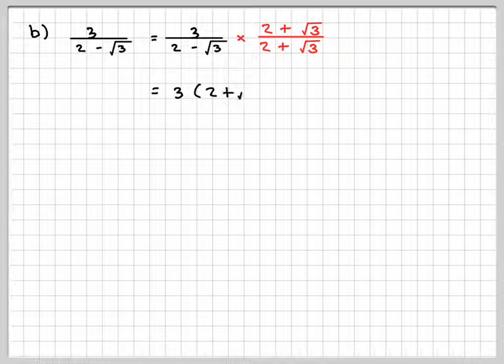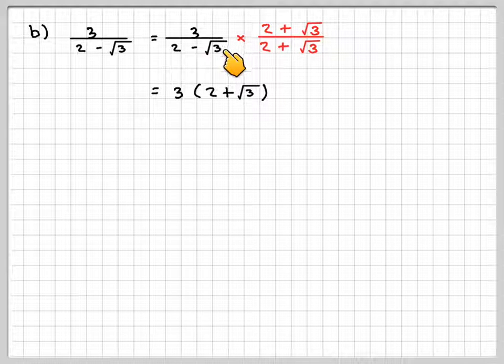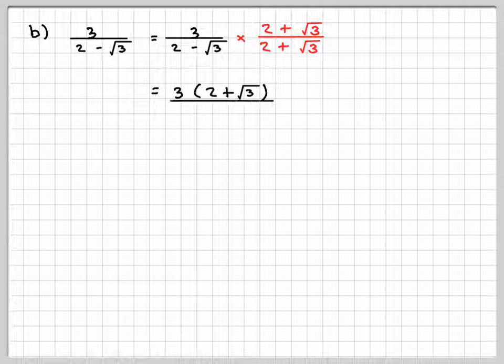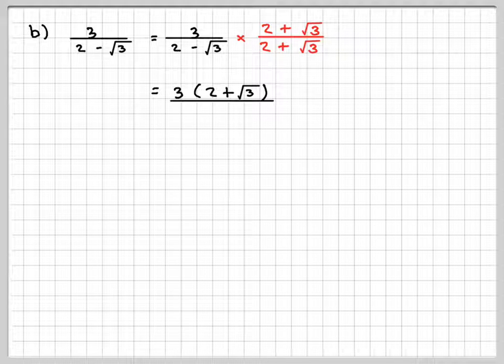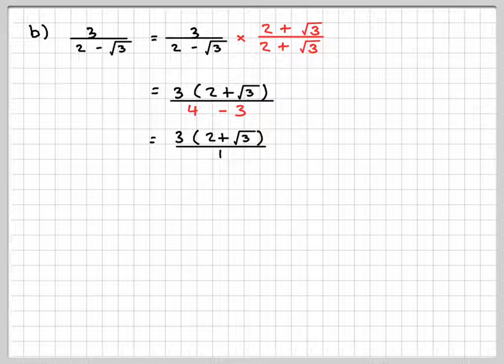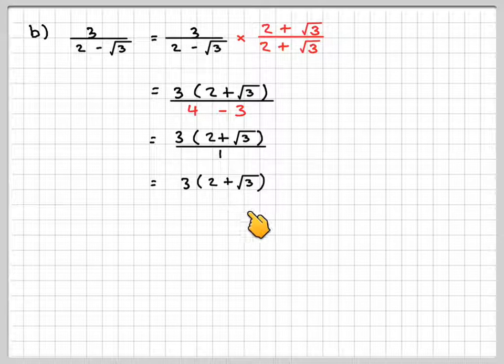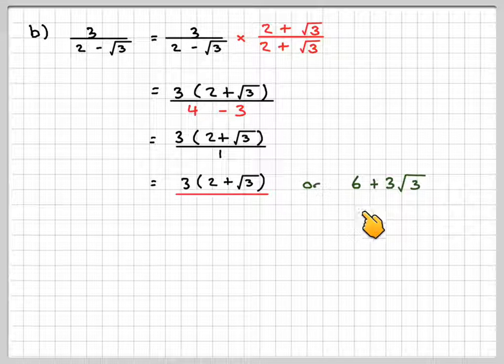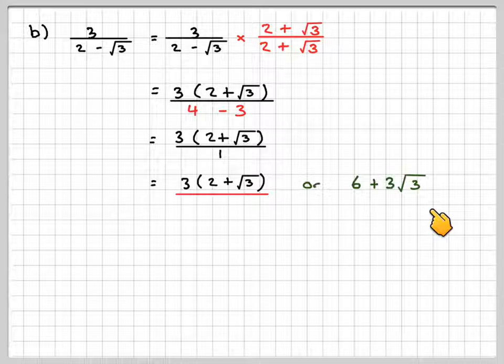Right, so using the idea of what we've just done, the numerator will just become 3 times 2 plus root 3. But the denominator will become 4 minus root 3 times root 3, which is 3. So that's going to become 3, 2 plus root 3 over 1, which gives an answer of 3 times 2 plus root 3. And if I multiply that bracket out, you can write it as 6 plus 3 root 3.